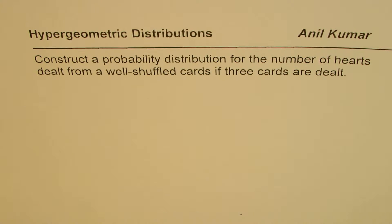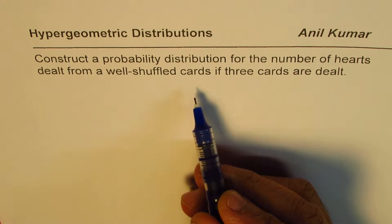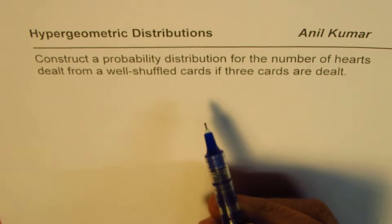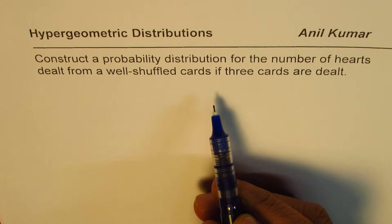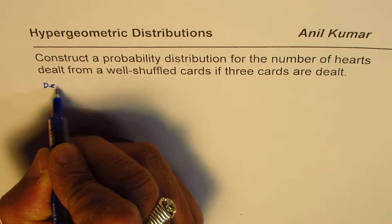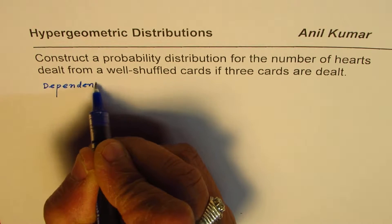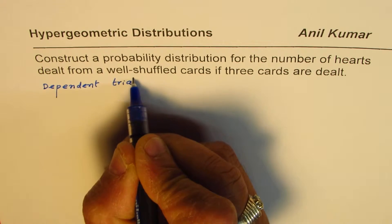I'm Anil Kumar and in this video we have an example for hypergeometric distributions. The question is: construct a probability distribution for the number of hearts dealt from a well-shuffled deck if three cards are dealt. Since cards are not replaced after being dealt, there is repetition of the experiment — dealing cards one after the other — and these are not independent experiments; they are dependent experiments, which are the characteristics of hypergeometric distribution.